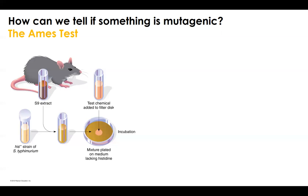Do we just unleash chemicals into the world and see if everybody becomes teenage ninjas? The way that we're going to test these chemicals to determine whether they are mutagenic is through something called the Ames test.